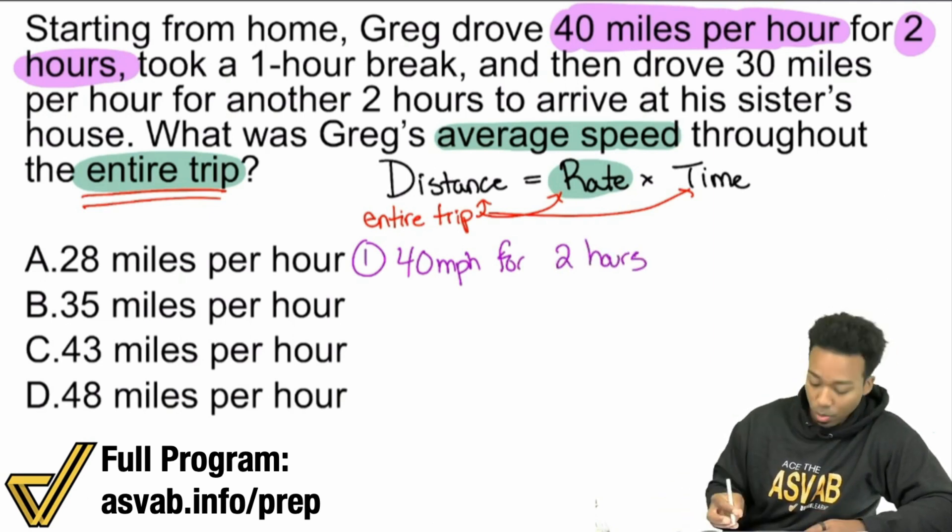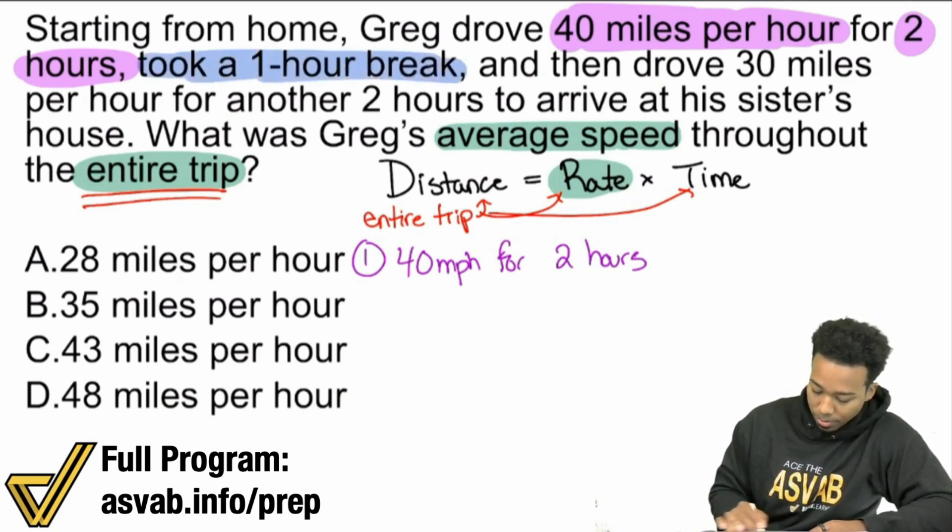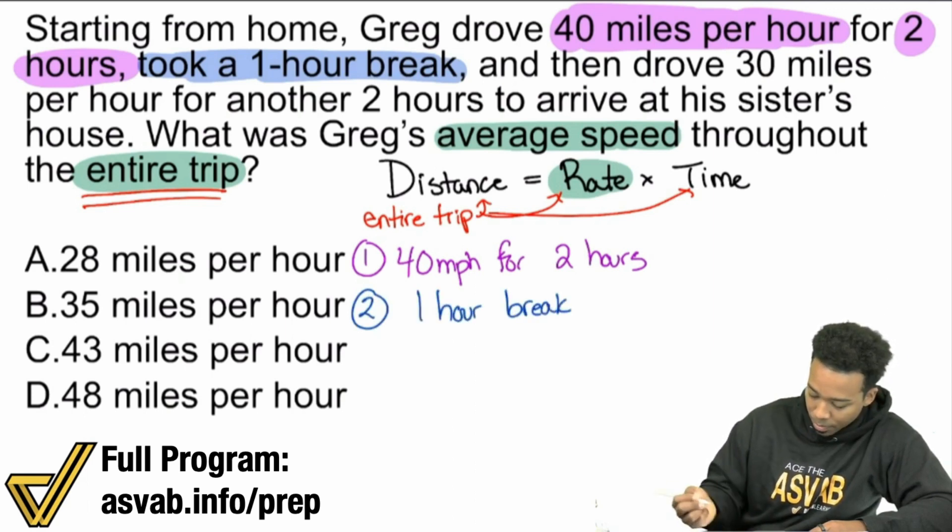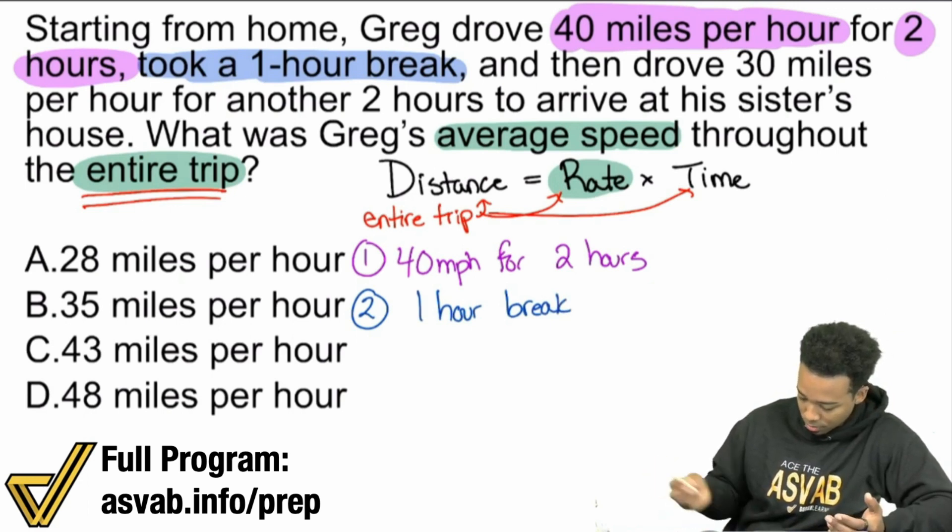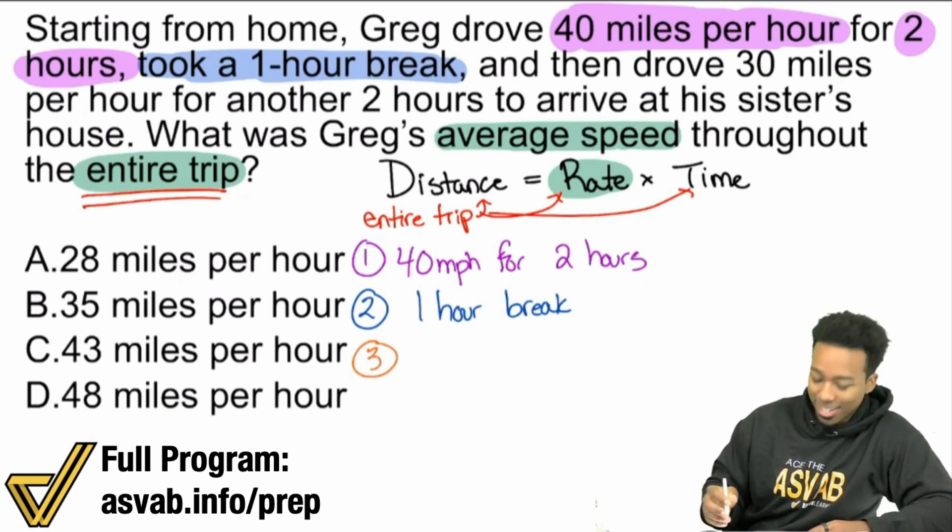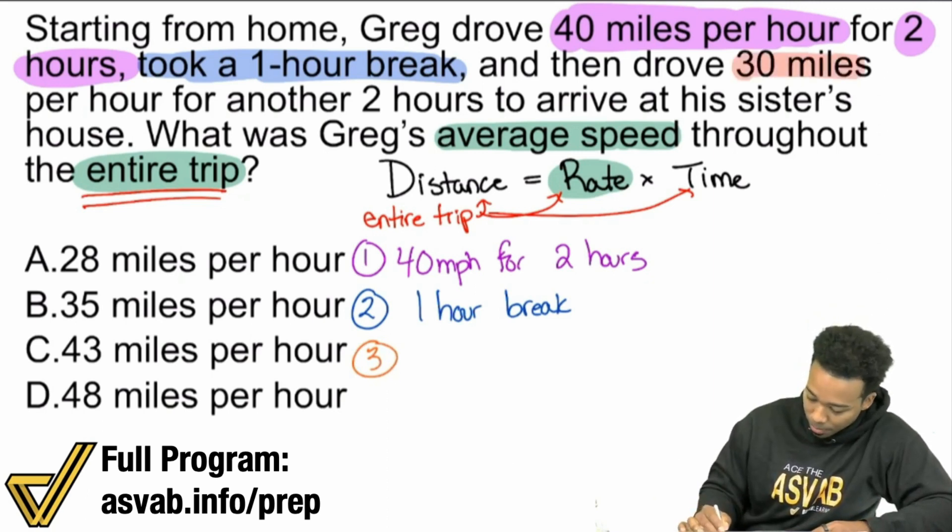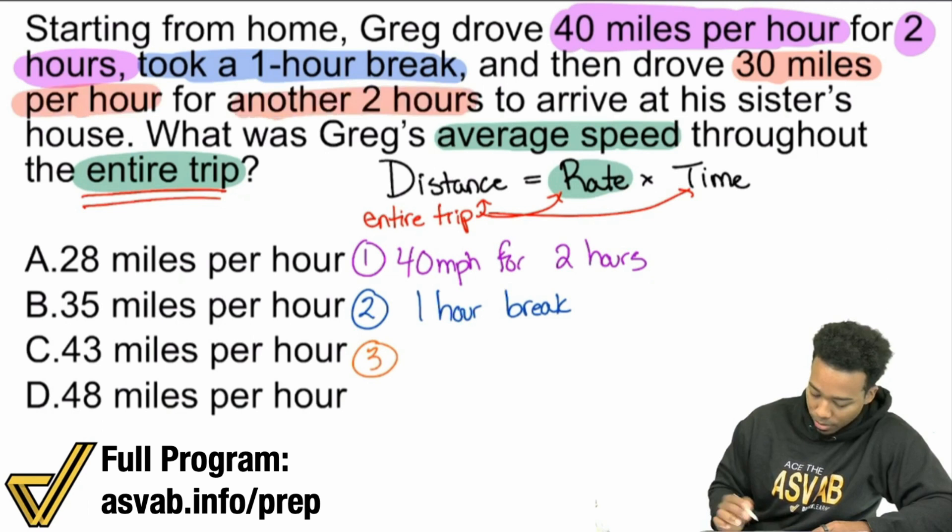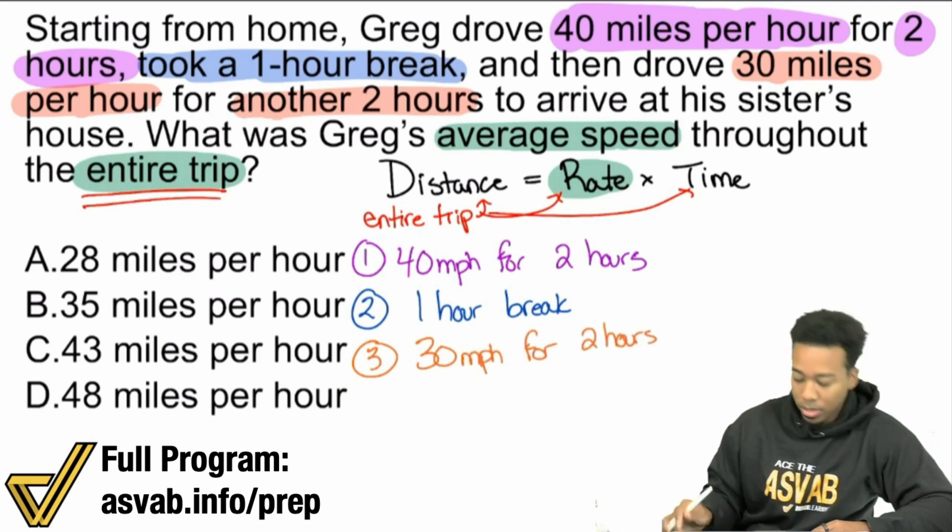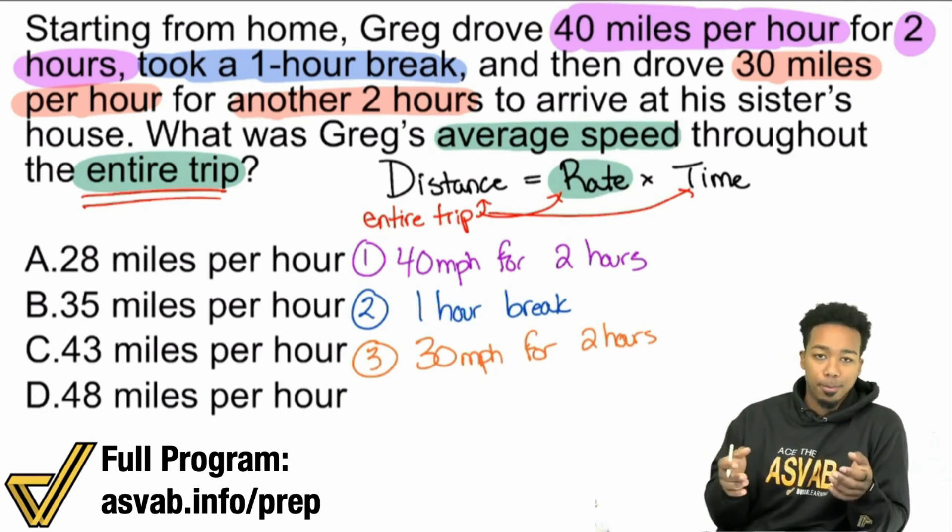Then here in the second piece, he took a one hour break. So the second part of the trip is literally just a break. One hour break. And then part three, drove 30 miles per hour for another two hours. So right there, 30 MPH for two hours. Remember, we need the entire trip.